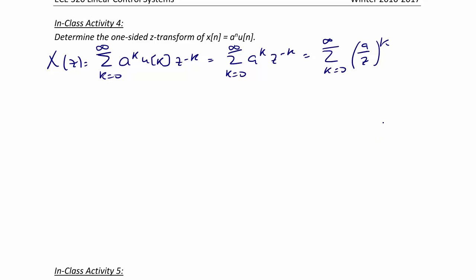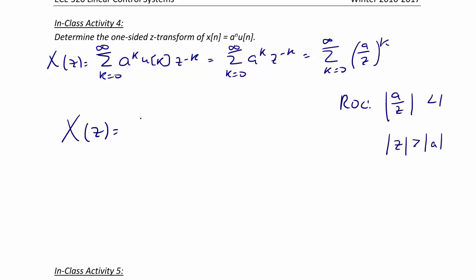We know that the region of convergence has to be the magnitude of A over Z less than one, because otherwise the summation will blow up as K goes to infinity. Another way of writing that region of convergence is the magnitude of Z is greater than the magnitude of A. Finally, X of Z equals one over one minus A over Z, which equals Z over Z minus A.